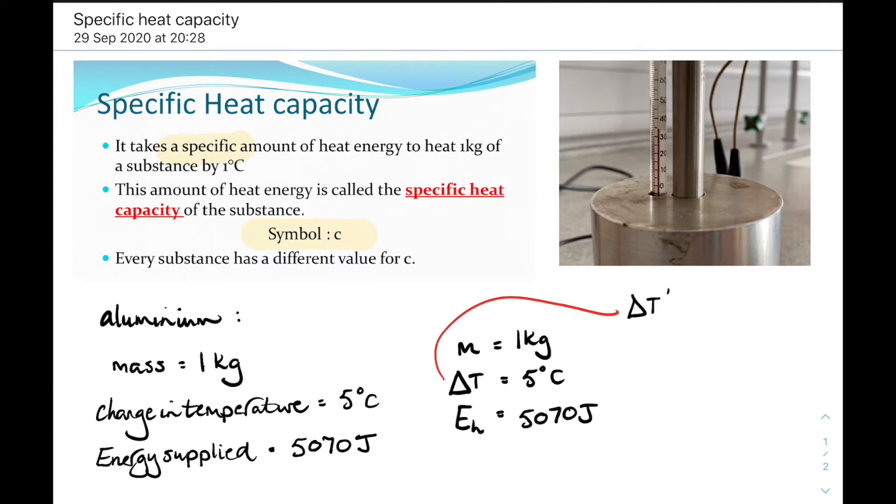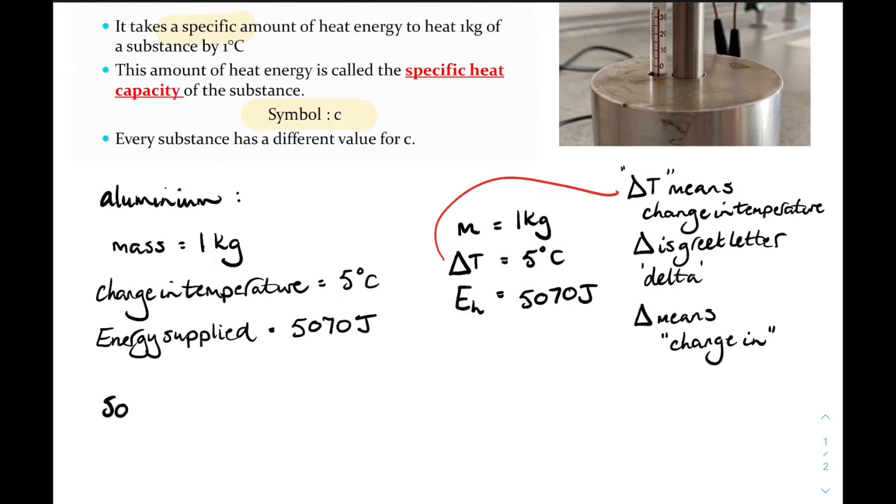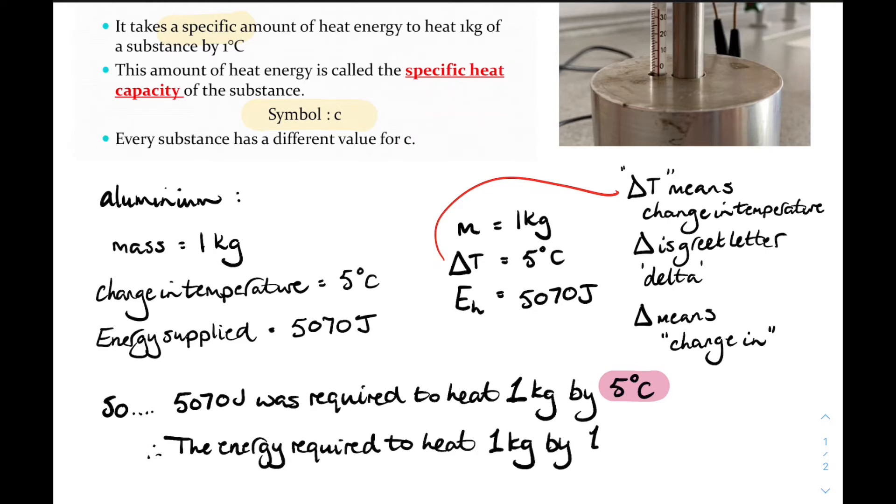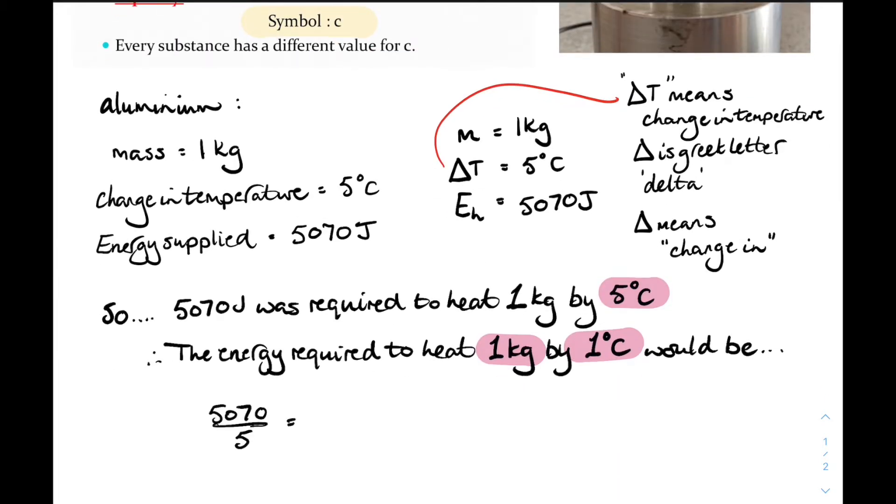M for mass. Now triangle T, we actually call it delta T. It stands for change in temperature. Delta is the Greek letter which means change in. So delta T was 5 degrees C. And our heat energy was 5070 joules. That's what was required to heat our 1 kilogram by 5 degrees. So what was the energy required to heat 1 kilogram by 1 degree? Well we would divide that 5070 by 5. And we get 1014 joules per kilogram per degree C.